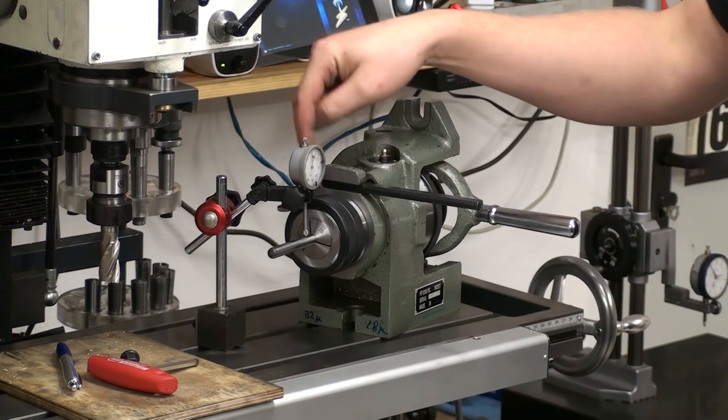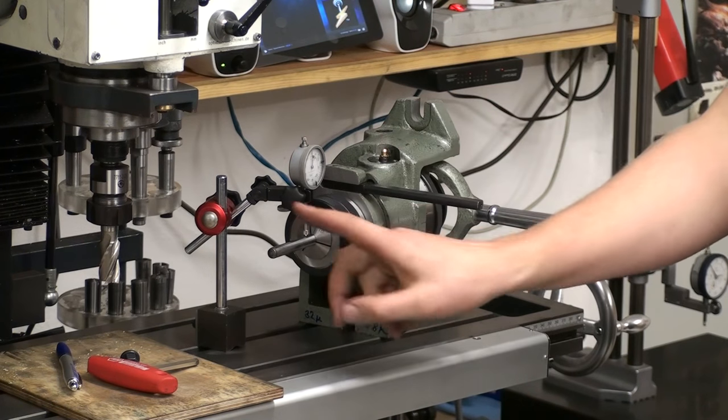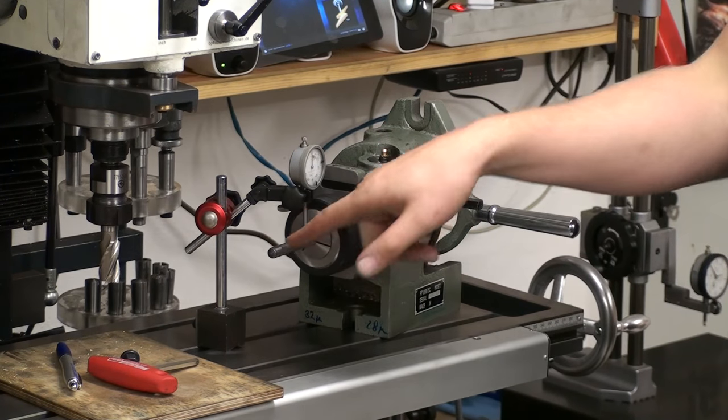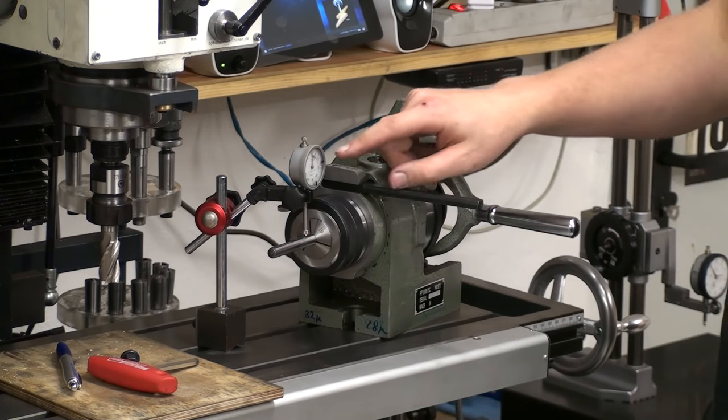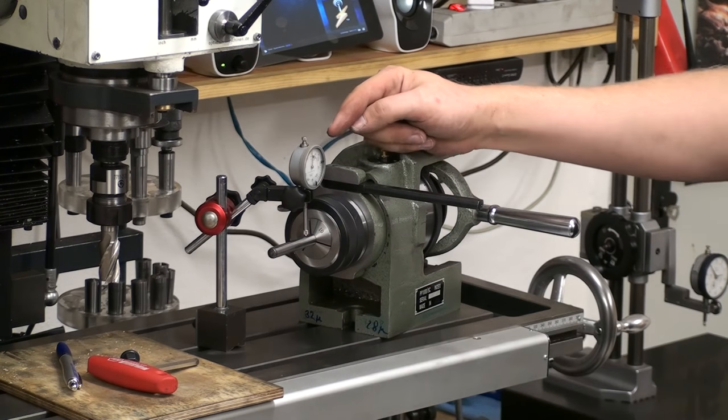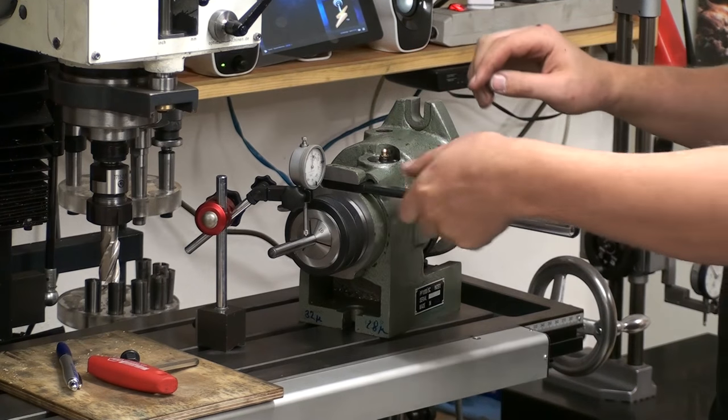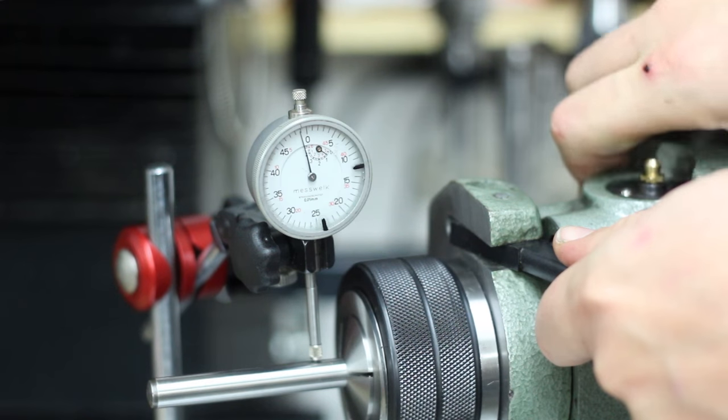Okay, I clamped the indexer to the table of my milling machine. And I'm checking the runout on a clamped dowel pin. Just a hardened ground 10mm dowel pin. And I have a one hundredths of a millimeter per division indicator up here. Let's disengage the index pin and give it a roll.